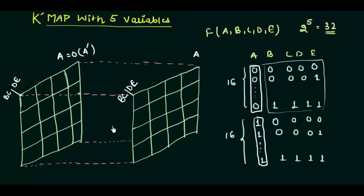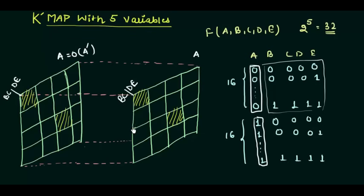This cell in the first map coincides with the corresponding cell in the second map — they are overlapping each other, they are the same. The only difference is that A has changed from 0 to 1. Now let's see how to solve a problem in this type of 5 variable KMAP.